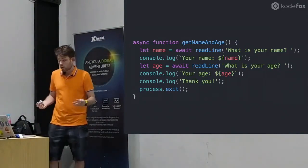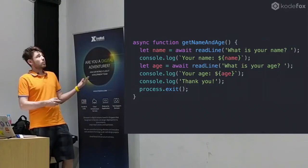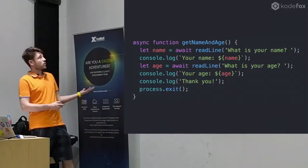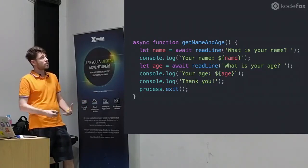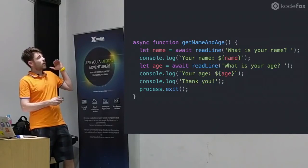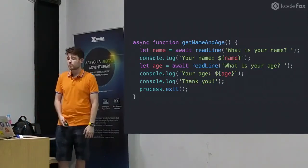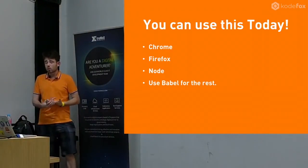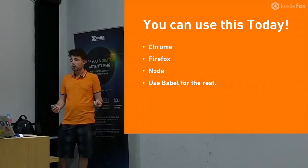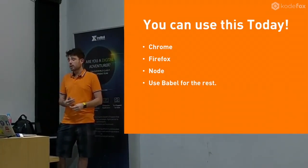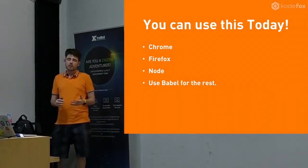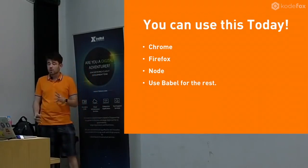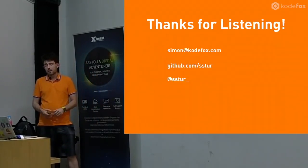User input has traditionally been hard with Node.js. If you've ever written a CLI tool, you need to read data from the user, then have a callback, then read more data — and it becomes really nested. Our final example is that we can create a readline function that returns a promise, and we can now await it and write command-line programs just like you would in Python or any other language, while getting all the advantages of Node. You can use this today — async/await is in Chrome, Firefox, and Node. For any other browsers, use Babel. It's not that bad because async/await is a thin layer on top of generators and promises, and most browsers support generators anyway.